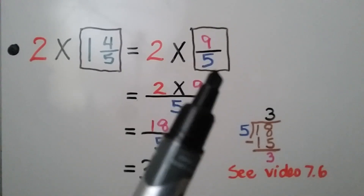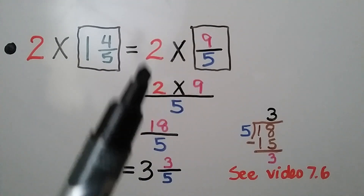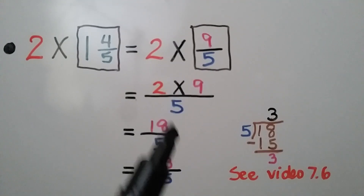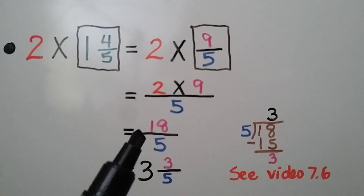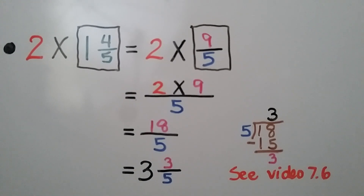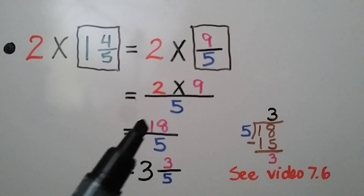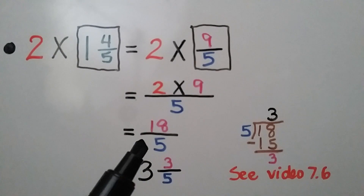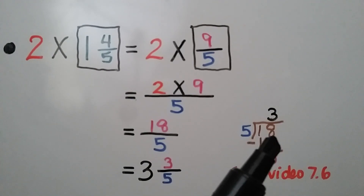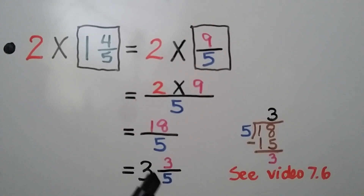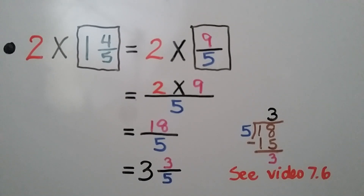We multiply 2 times 9 fifths by multiplying the whole number to the numerator. That's 2 times 9, that's 18, and we write it over that same denominator. We put this in simplest form by looking at 18 fifths as a division problem. We think 18 divided by 5. How many times will 5 fit into 18? Well, 5 times 3 is 15. The quotient is going to be our whole number 3, and the remainder 3 is going to be our numerator. Our product is 3 and 3 fifths.